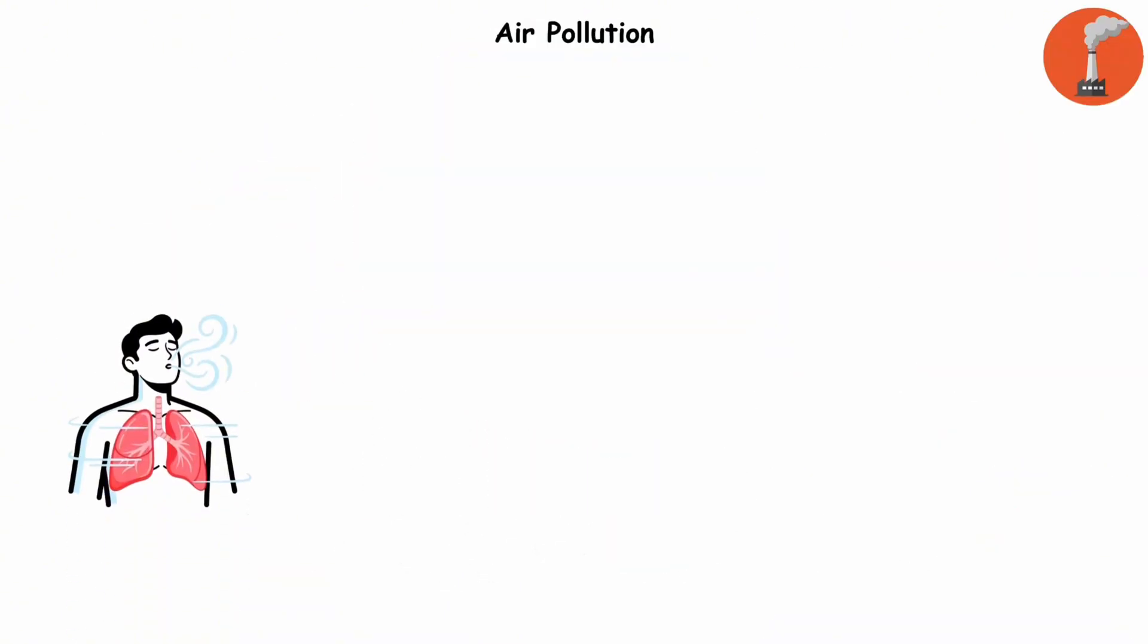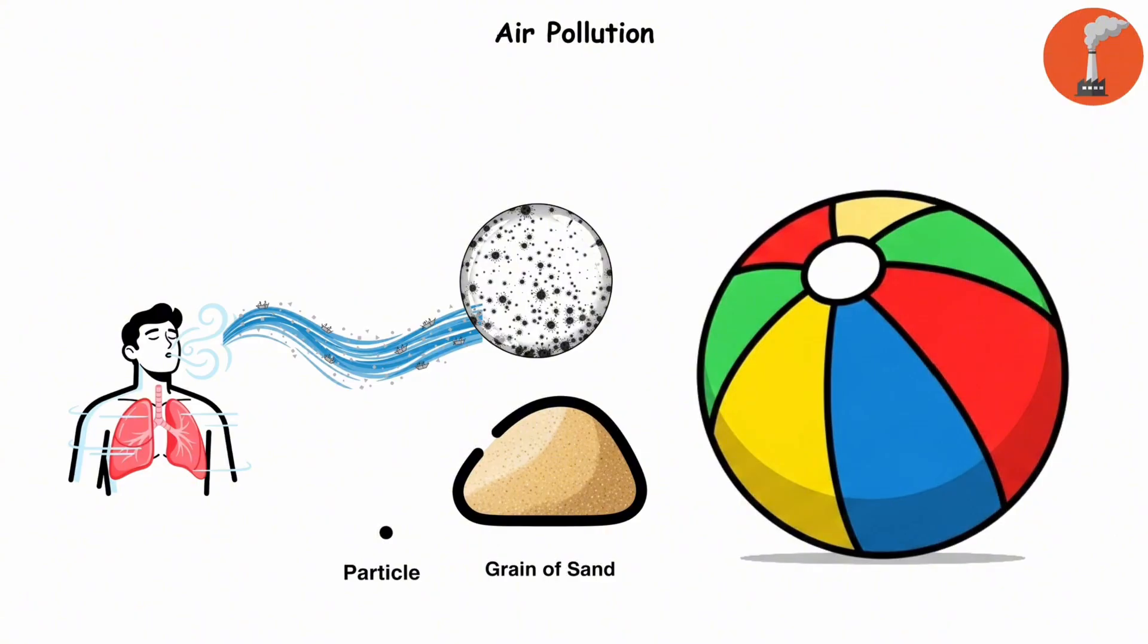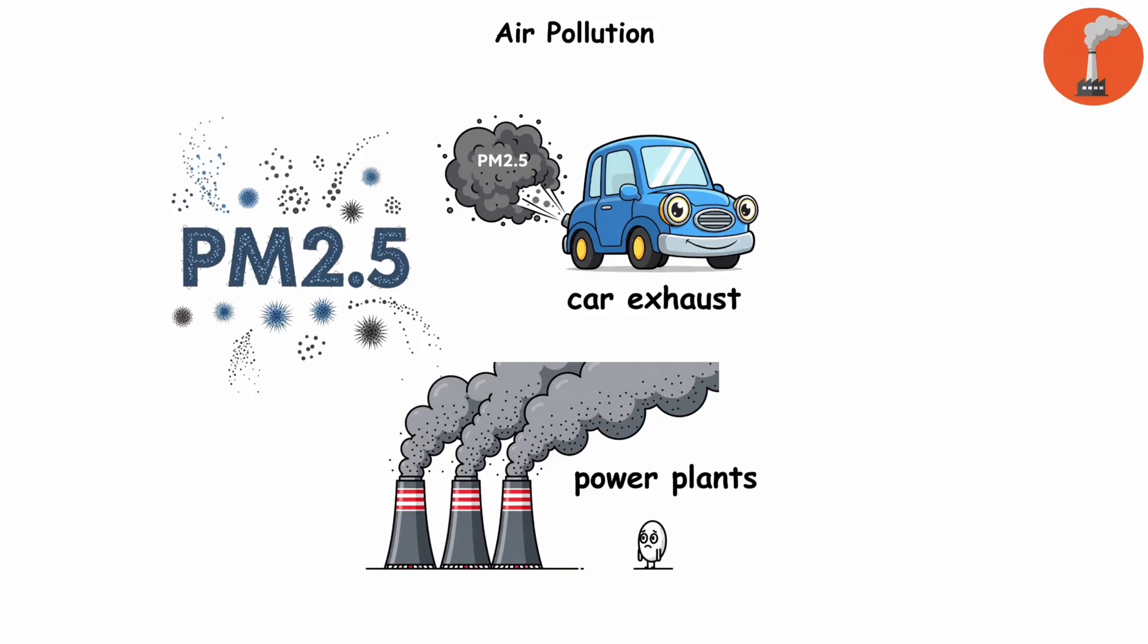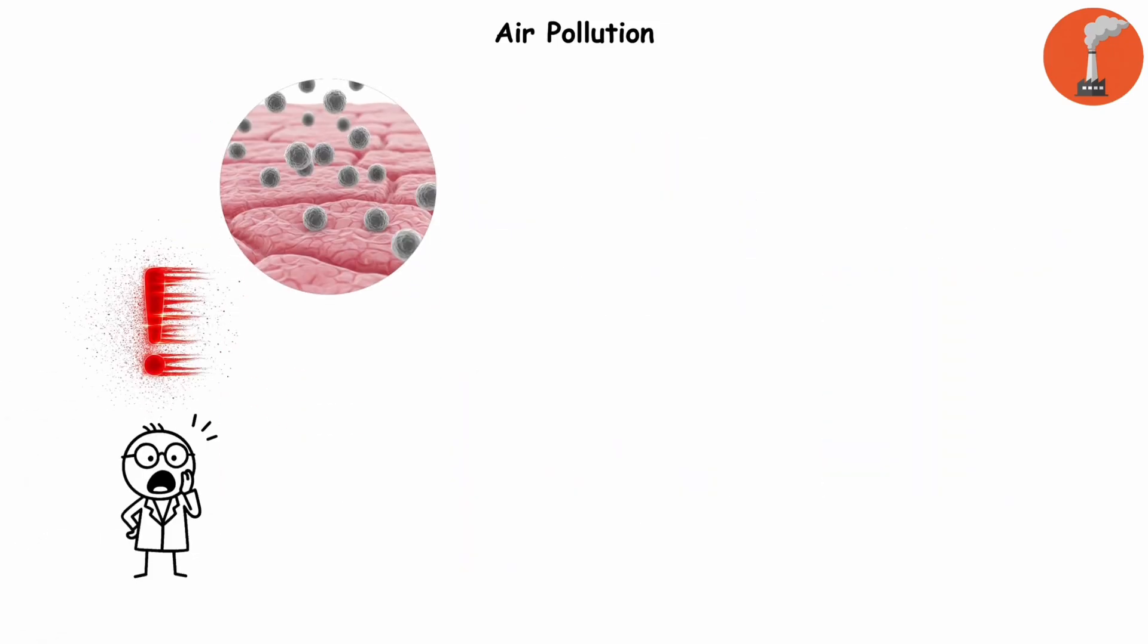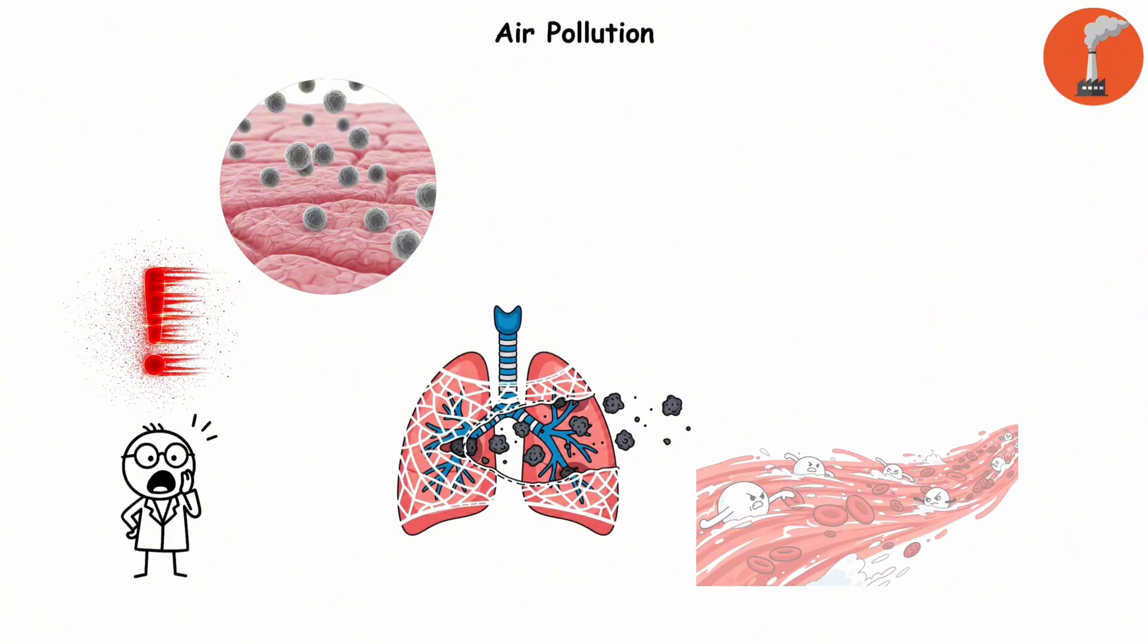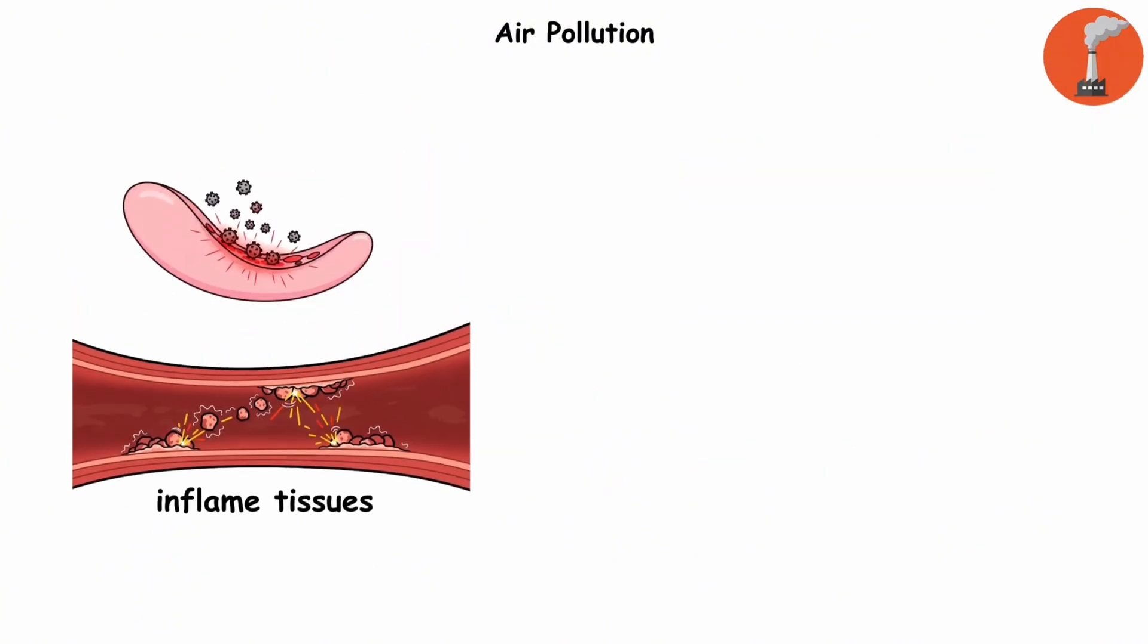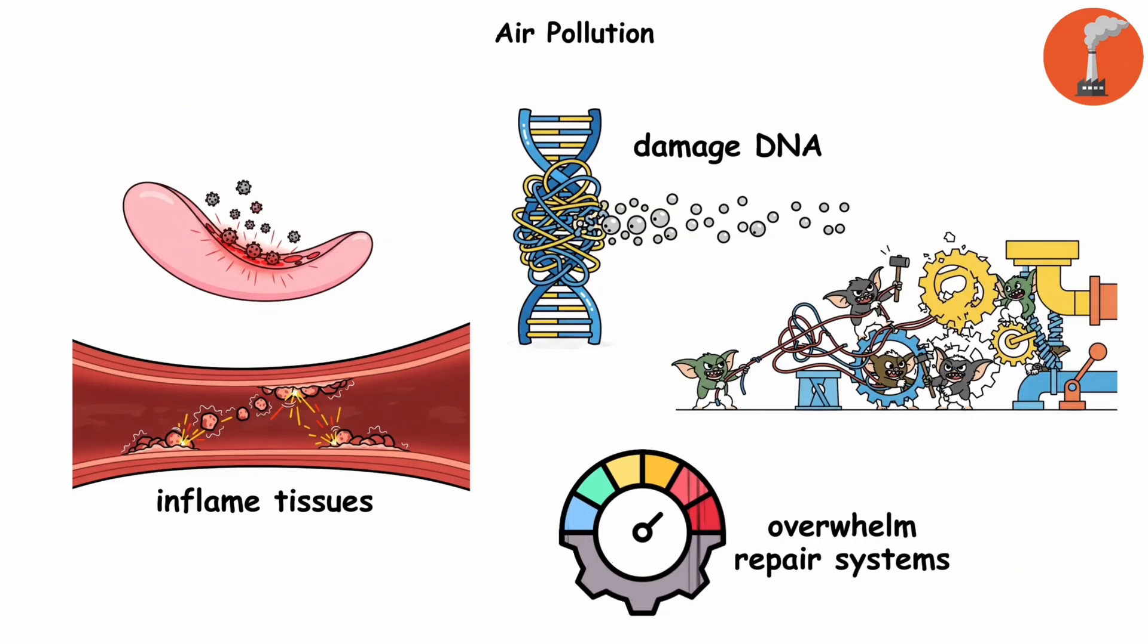Air pollution. Take a deep breath. Now imagine that breath carrying thousands of microscopic hitchhikers. Particles so tiny they make a grain of sand look like a beach ball. Those are PM 2.5 particles, and they're everywhere. Car exhaust, power plants, even that fresh city breeze. Here's the scary part. These specks are so small they slip past your lungs' defenses, dive deep into your bloodstream, and start wreaking havoc. They inflame tissues, scramble DNA, and overwhelm your body's repair systems, like gremlins running wild inside a machine.